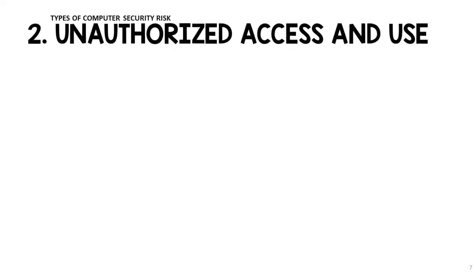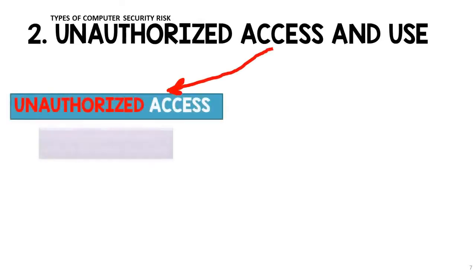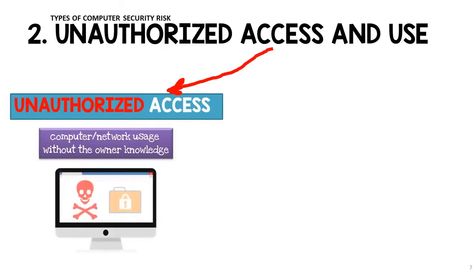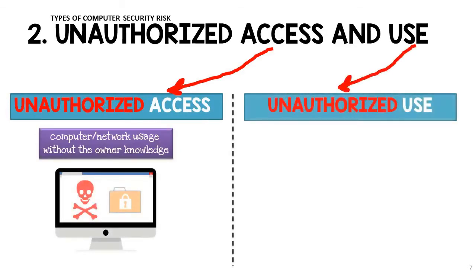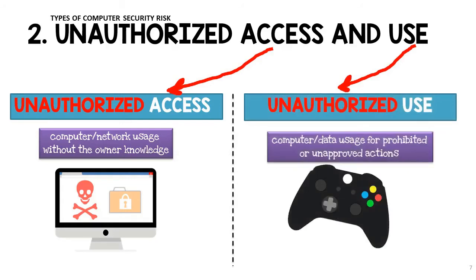System properties may be altered, the operating system does not start up, or shuts down suddenly without warning. Unauthorized access and use: Unauthorized access is computer or network usage without the owner's knowledge. Unauthorized use is computer or data usage for prohibited or unapproved actions.